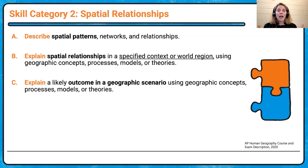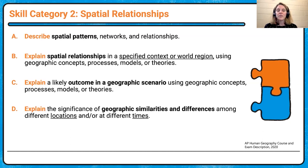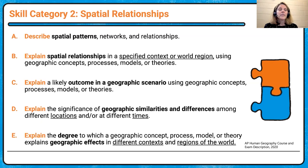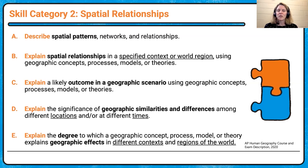When we say 'explain,' we're still on how and why, but also a likely outcome. We want to understand the relationship in a specified context and predict likely outcomes of those events, models, or theories. We also want to talk about the significance of similarities and differences at different locations or times — for example, the Green Revolution in Mexico versus India. Finally, explain the degree to which a geographic concept, process, model, or theory explains geographic effects in different contexts — looking for trends of a lot, a little, increase, or decrease.